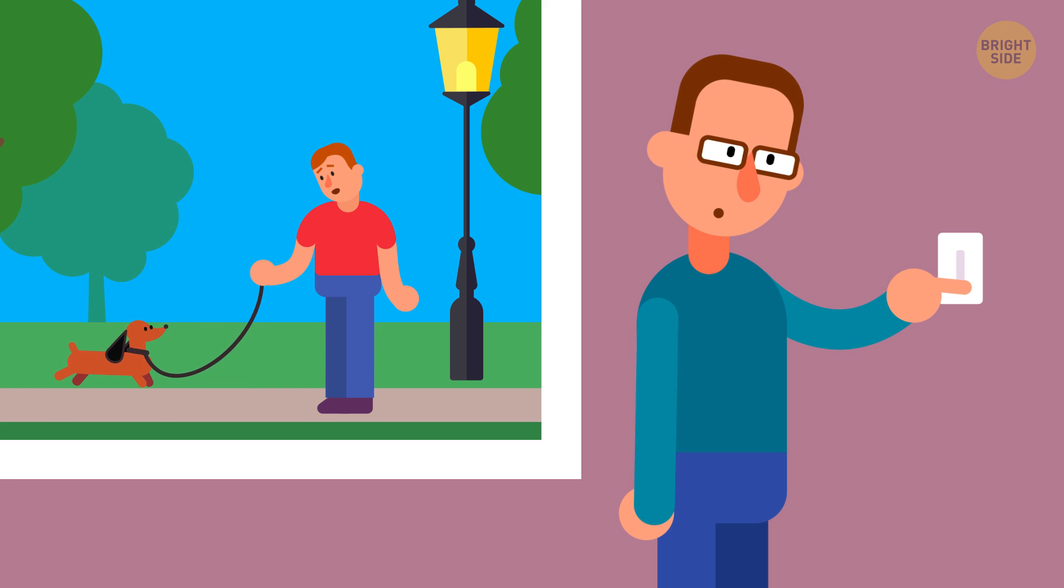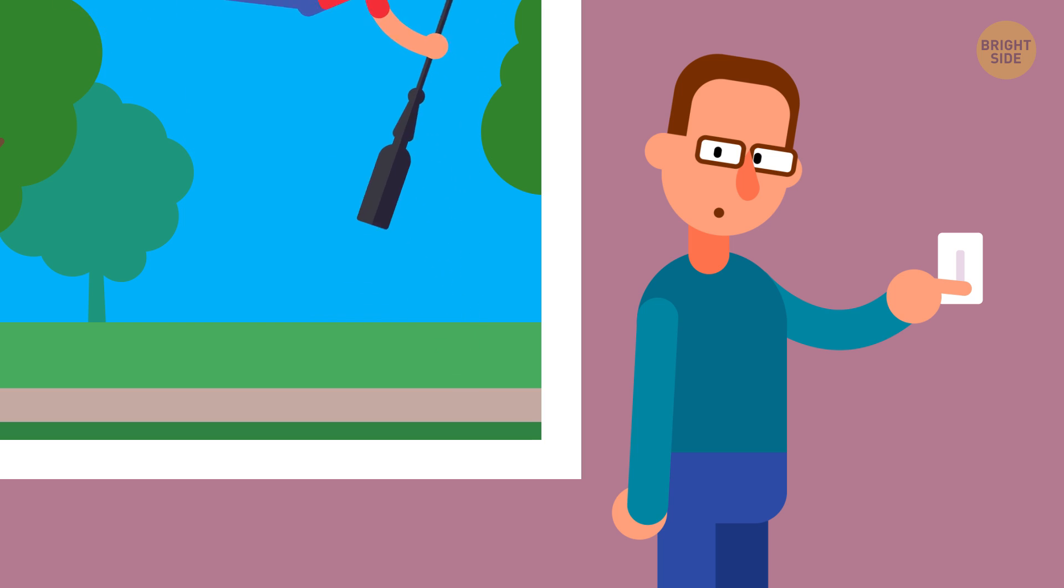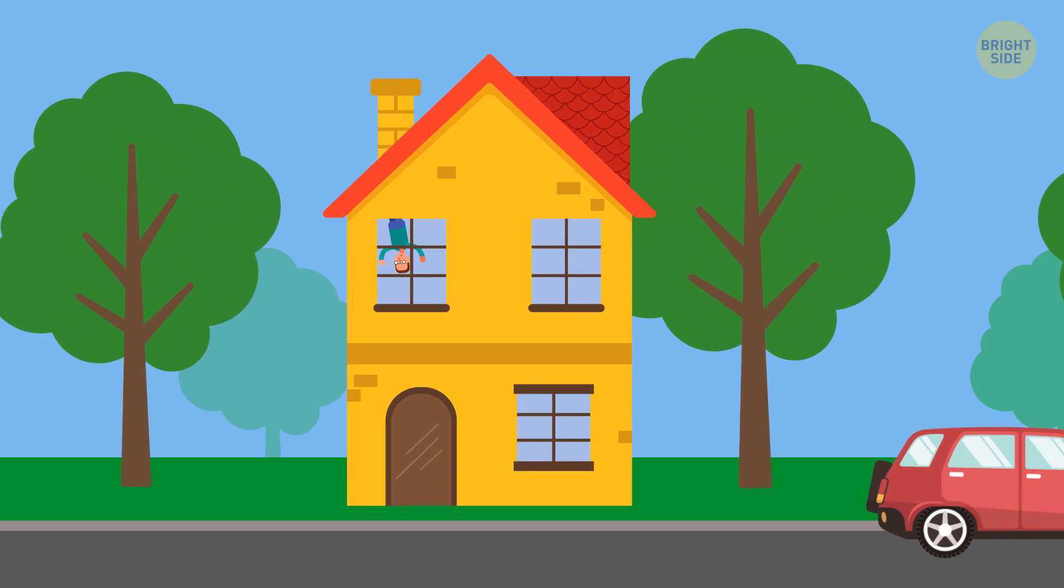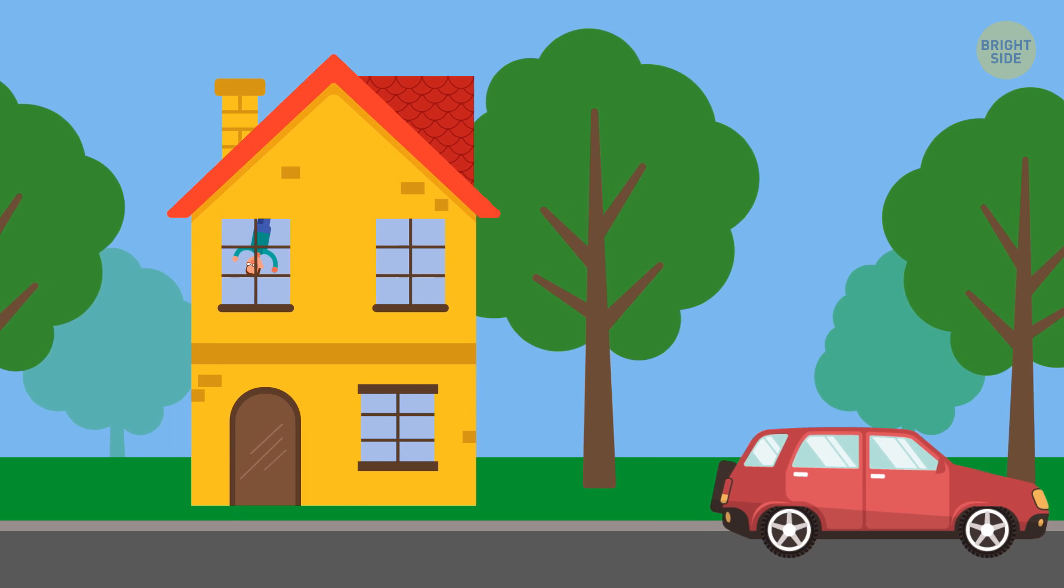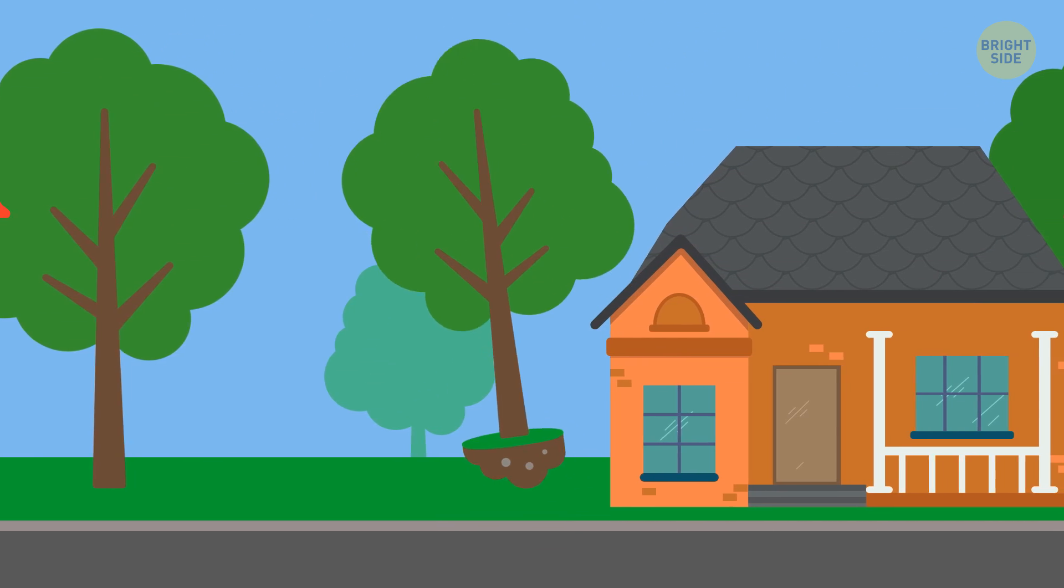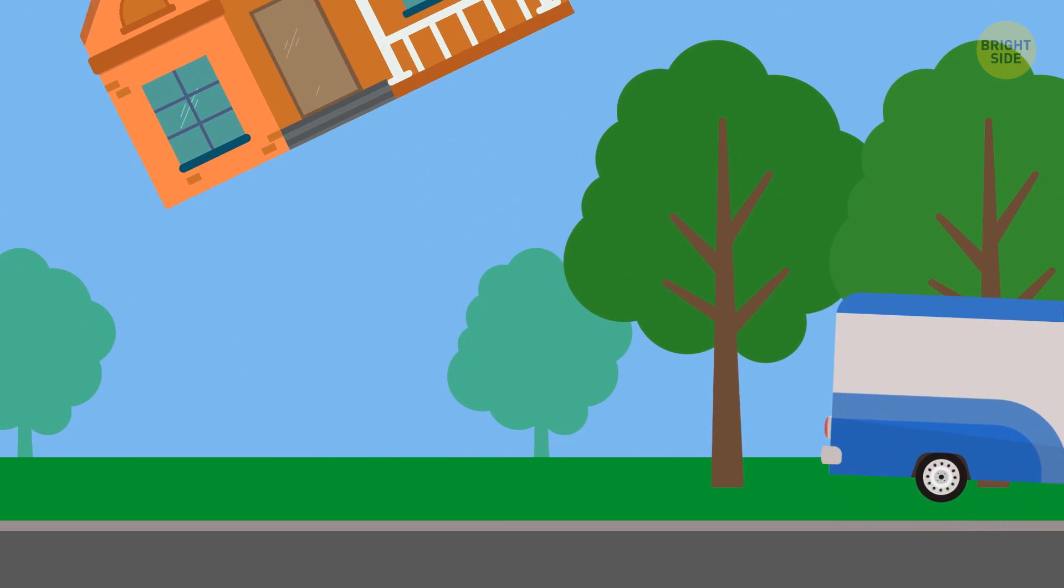People unlucky enough to be outside when the gravity disappears would be gone in the blink of an eye. Those people inside buildings would be safer, but not for long. It's true that man-made structures are supposed to be firmly rooted to the ground, and they would indeed stay put after the gravity vanishes. But sooner or later, they'd also give way.